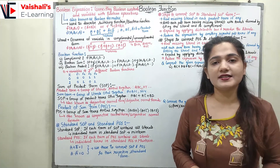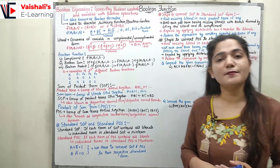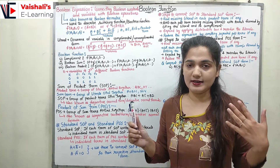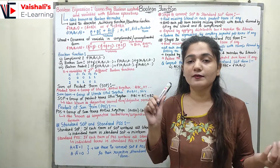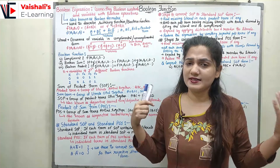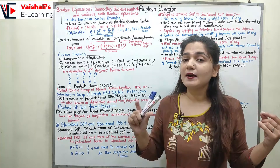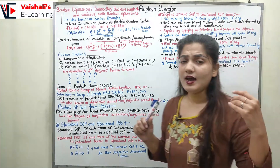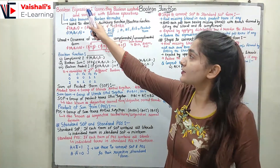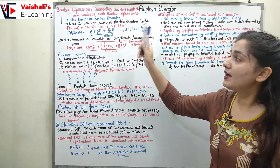Let's start our discussion with the boolean expression. A boolean expression will have some boolean constants — the constants one or zero, which are not changing. And boolean variables, which could be a, b, c, x, y, z, p, q, and so on. Boolean constants and boolean variables are combined with the help of boolean operations — the AND operation or the OR operation — and in this manner we get the boolean expression.